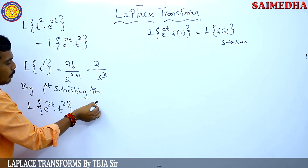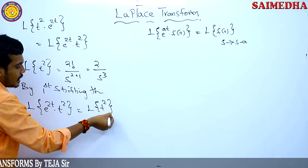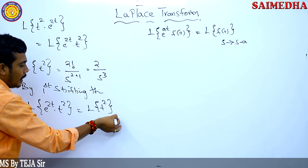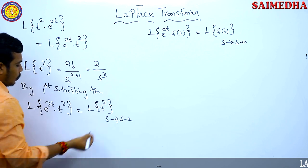The Laplace transform of e^(2t) into t² equals the Laplace transform of t² where s is replaced with s minus 2.